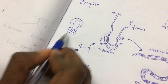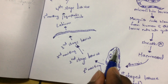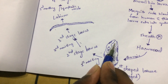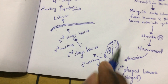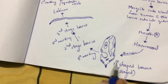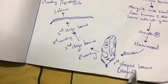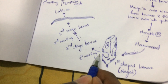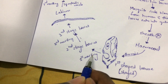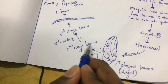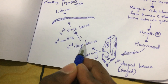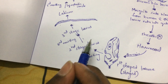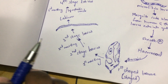This is known as sausage-shaped, and this is known as the first stage larva. This first stage larva undergoes first molding and leads to the formation of second stage larva. The second stage larva undergoes second molding and leads to the formation of third stage larva.